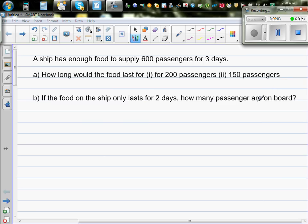A ship has enough food supply for 600 passengers for 3 days. How long would it last for 200 passengers and 150 passengers? If the food on the ship only lasts for 2 days, how many passengers are on board? This is an example of inverse proportion.